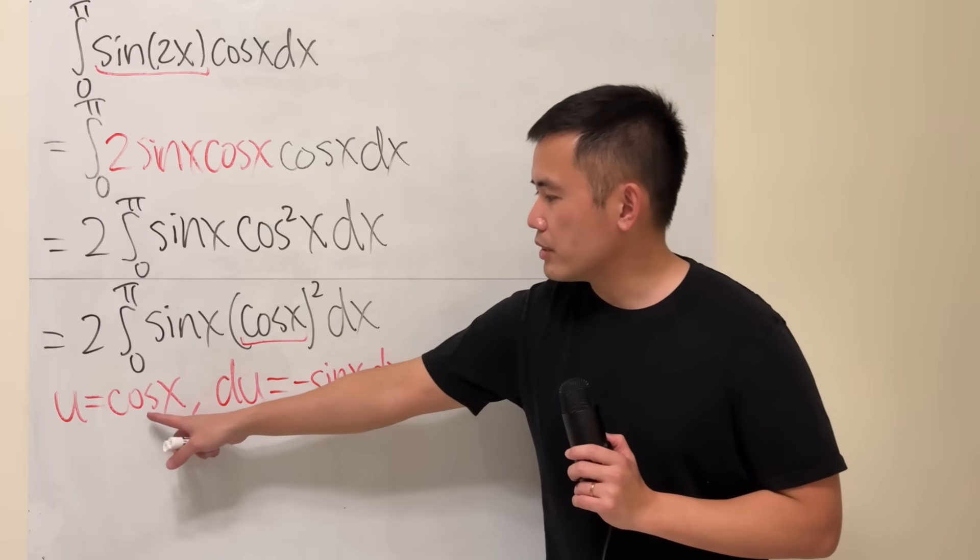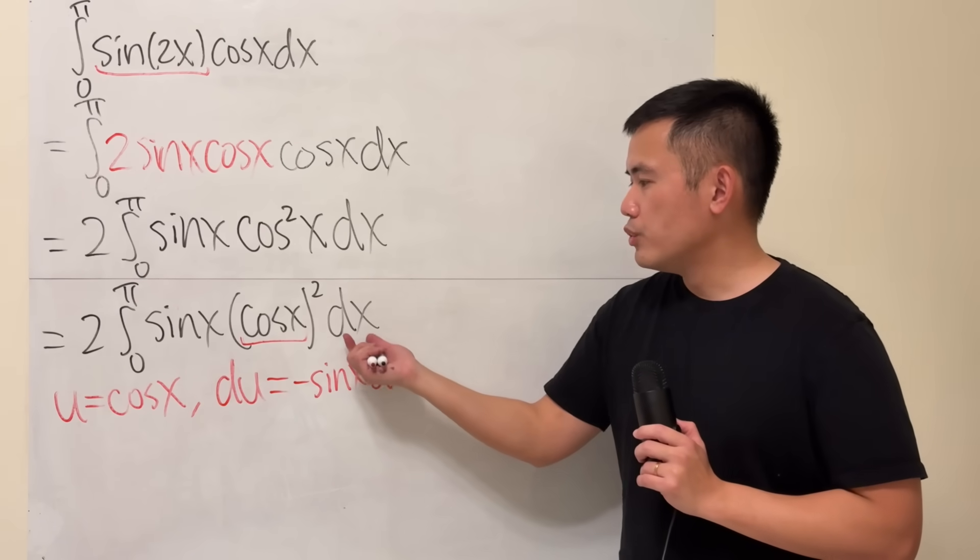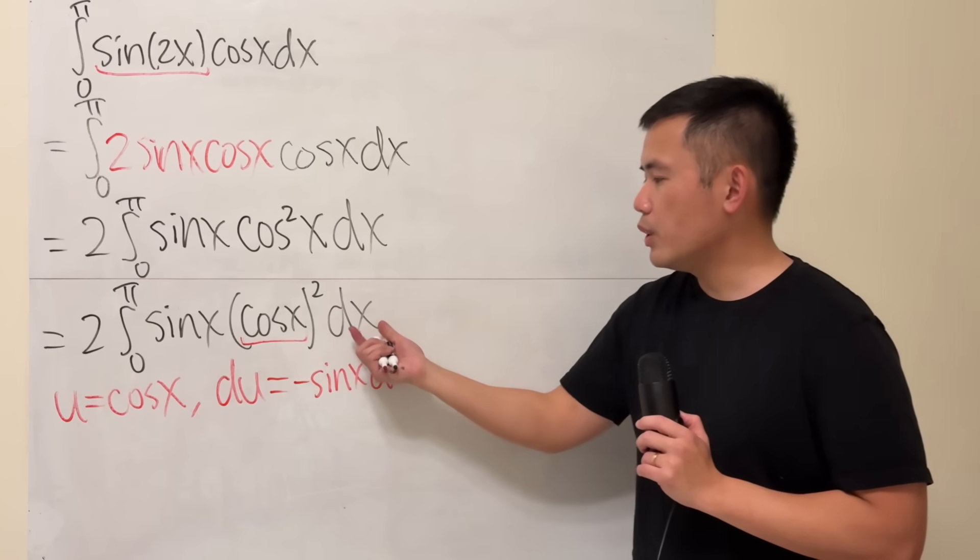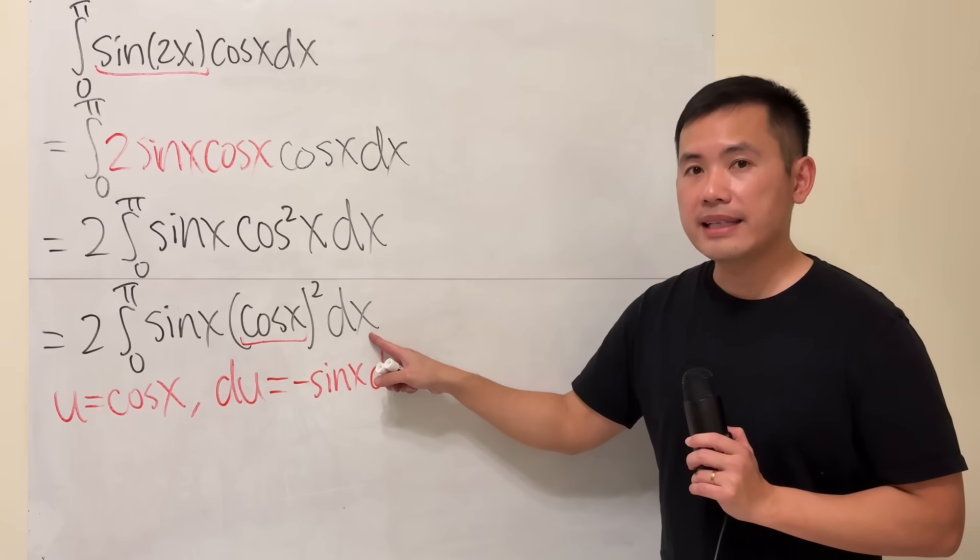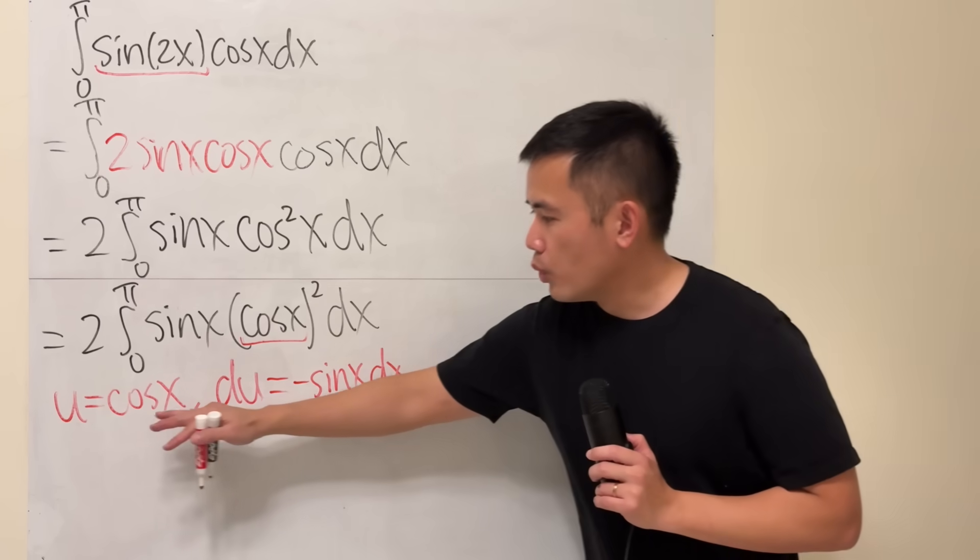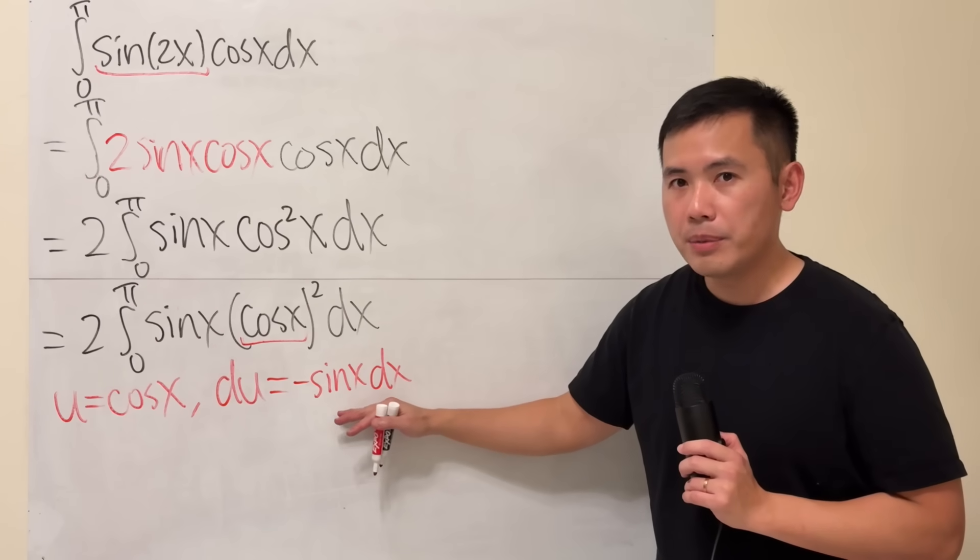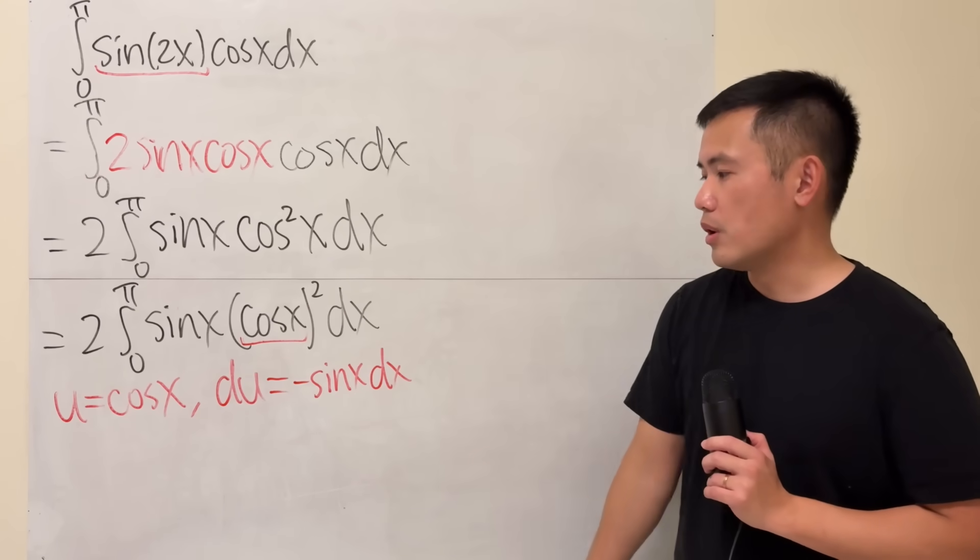Okay, once you have the u and also the du, remember the original integral, here we have the dx. I call this that we are in the x world. When we do this, it will help us to bring this integral to the u world.